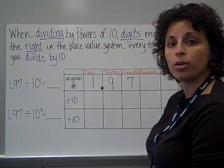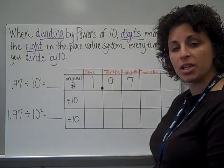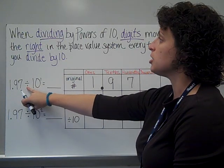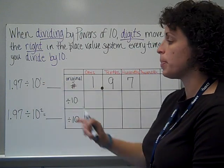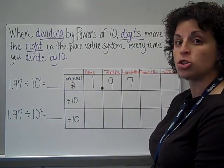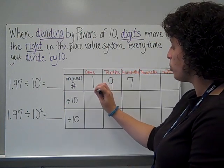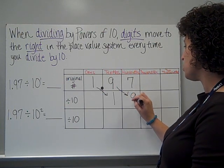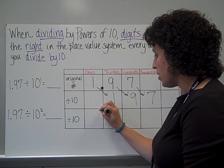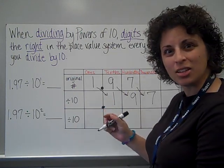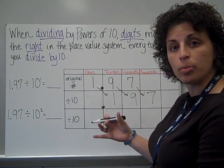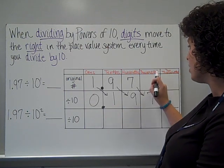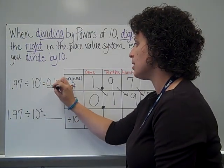When we divide by a power of 10, instead of going to the left, our digits are going to move to the right every time we divide by a 10. Starting with my same original number, 1 and 97 hundredths — when we are dividing, our digits are going to move to the right, and because I'm dividing by 10 to the first power, that is just 1 ten, so the digits will make just one move. The answer is getting smaller. This 1 comes to the tenths place, 9 to the hundredths place, and the 7 comes to the thousandths place. Now I have to put my decimal in here, and you should never start an answer with just a decimal. If there is nothing in the whole number places, we should put a 0.